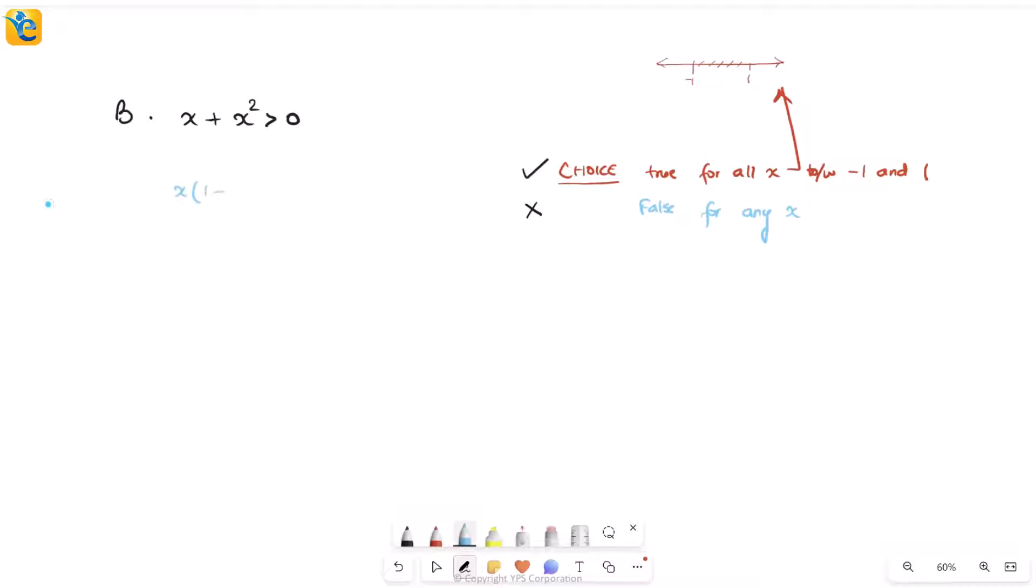Here you are, yet another equation here. We will again create factors out of this. The zero points are negative one and zero. Create your wave. And since you want it to be greater than zero, you're going to take the region where your wave is above the number line. Then your inequality is true in these two regions that I highlighted in yellow.